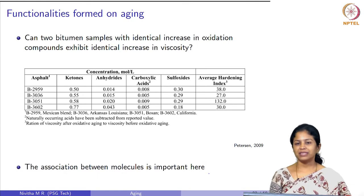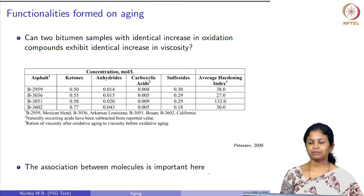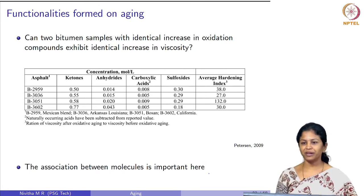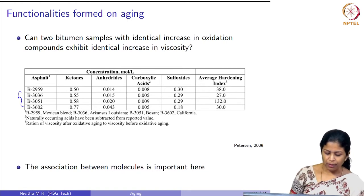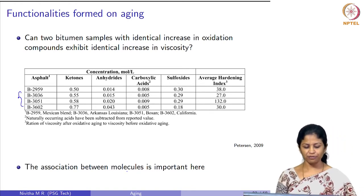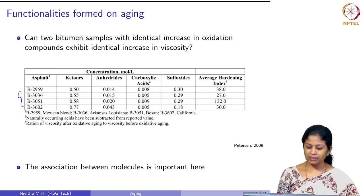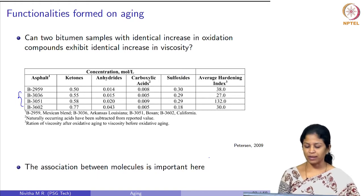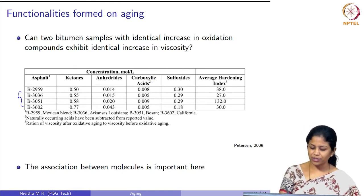An increase in the formation of oxygen-containing functionalities does not always lead to an increase in stiffness, because association between molecules is also important. This was verified through a study considering four different types of bitumen. Looking at bitumen B3036 and B3051, we can examine the concentration of functionalities — ketones, anhydrides, carboxylic acids, and sulfoxides. Note that the naturally available acids have been subtracted from the reported values, so only what is formed on aging is reported.